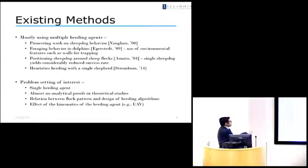So keeping this in mind, what we would be interested in this problem is that instead of having a group of herding agents, which is common in this kind of field, we would ideally want to have only a single herding agent. And we would like to give some kind of theoretical proofs and some kind of guarantees, because those are currently not available in the literature. And we would also like to see if we can extract some relationship between the flock shapes, their sizes, their behavior, and between the herding algorithms that we propose.